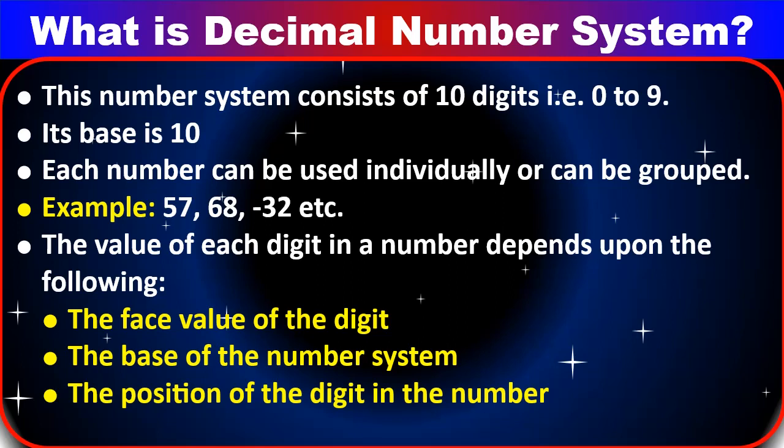What is the decimal number system? This number system consists of 10 digits, that is from 0 to 9, and the base of the decimal number system is 10. Each number can be used individually, like 0, 1, 2, 3 up to 9, or it can be grouped — for example 57, 68, 32, etc.